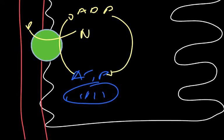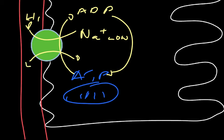We're using this to pump sodiums out from a lower concentration inside the cell to a higher concentration in the efferent arteriole. This is balanced by potassiums coming in from a lower to a higher concentration, but those potassiums then flow straight out again — this helps balance the charge, but it's not an important detail here. Principally, we're pumping the sodiums out against their concentration gradient.